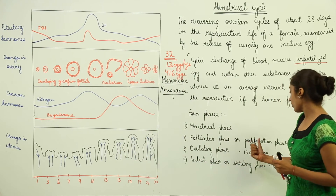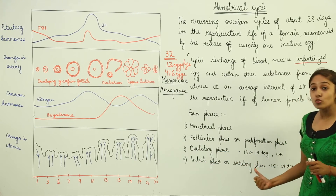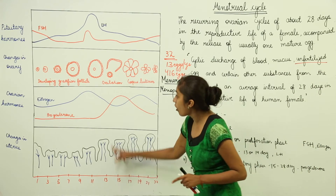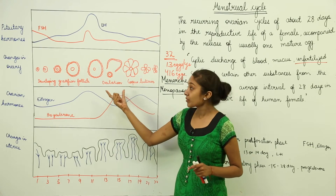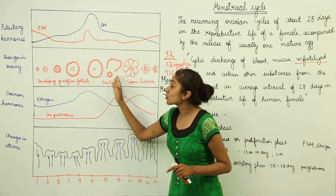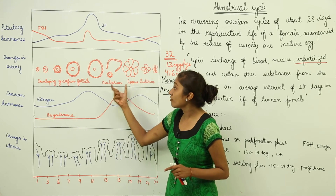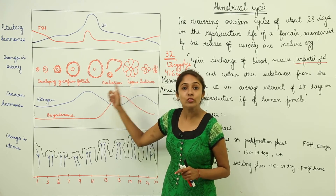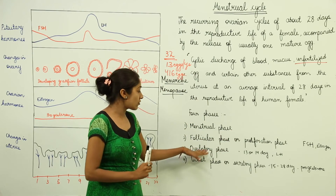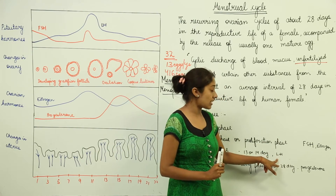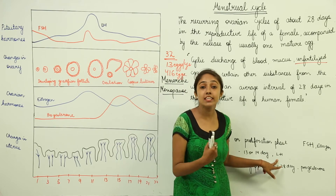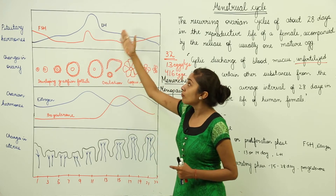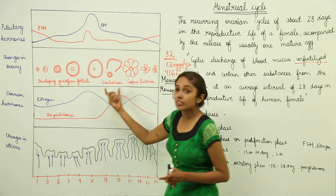The third phase is the ovulatory phase, occurring on the 13th or 14th day. From the Graafian follicle, one egg is released — this release of the egg is known as ovulation. This phase is associated with the hormone LH, luteinizing hormone, whose production increases to peak levels during the ovulatory phase.